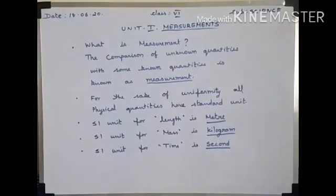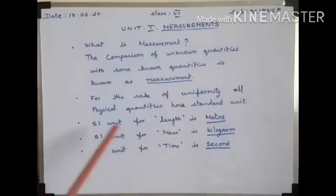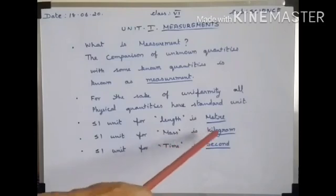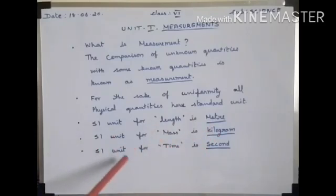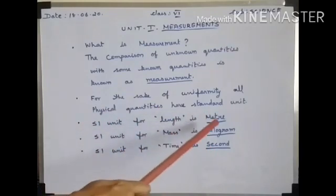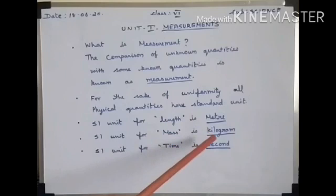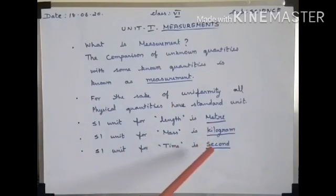The SI unit for length is meter. The SI unit for mass is kilogram. The SI unit for time is second. What is the SI unit for length? Meter. What is the SI unit for mass? Kilogram. What is the SI unit for time? Second.